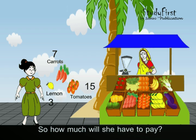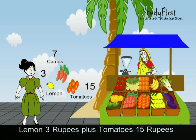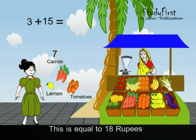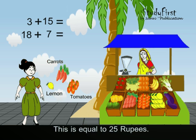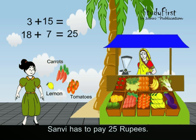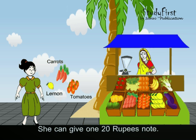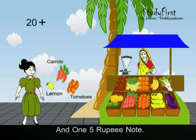So how much will she have to pay? Lemon 3 rupees plus tomatoes 15 rupees equals 18 rupees. 18 rupees plus 7 rupees for carrots equals 25 rupees. Sanvi has to pay 25 rupees. She can give one 20 rupee note and one 5 rupee note.